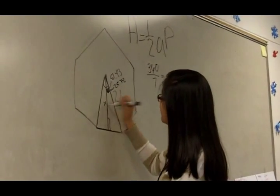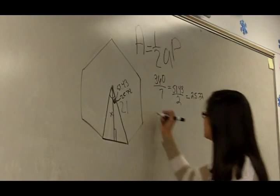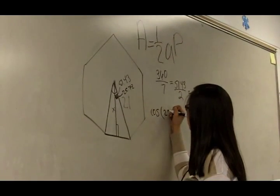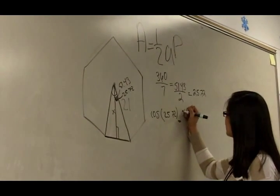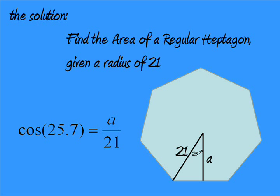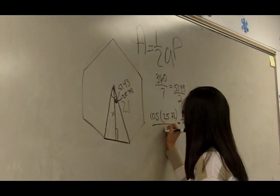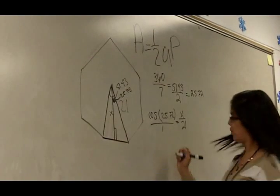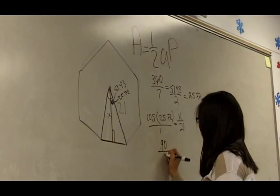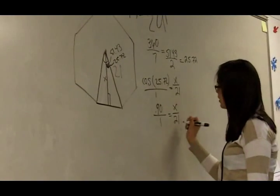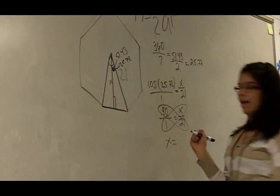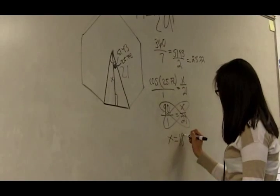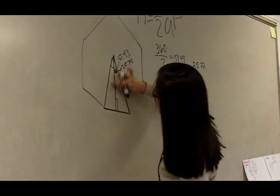Now you are trying to find the apothem. You can use trig by using cos of 25.72 equals x over 21. You find what cosine is, which is 0.90 over 1 times 21. Then you cross multiply. x equals 18.9, which is the apothem.